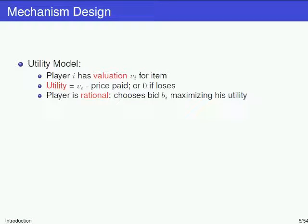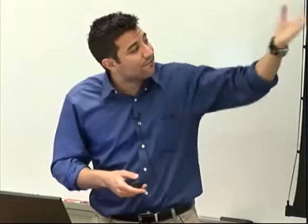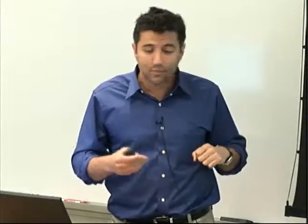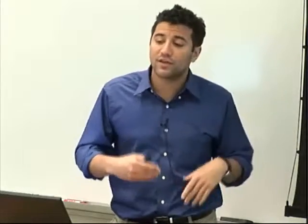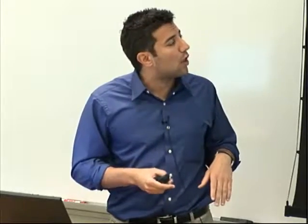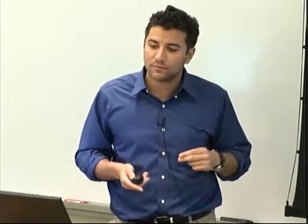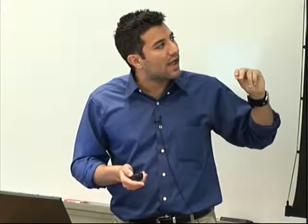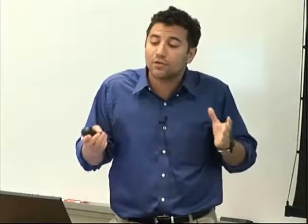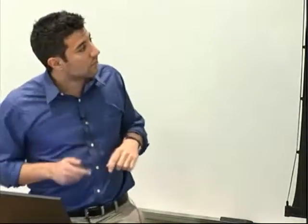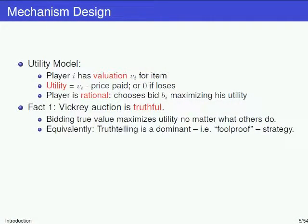To predict what's going to happen in such an auction, I need to model players' utilities. Each player has a valuation — a dollar amount representing how much they value the car. A player's utility is their value minus the price they pay if they win, or zero if they lose. A player is rational in that they choose the bid that maximizes their utility. The bid is not necessarily equal to the valuation — it's chosen strategically. Here's a fact: the Vickrey auction is truthful in the sense that for every player, bidding their true value is the best thing they can do. That's how they maximize their utility.